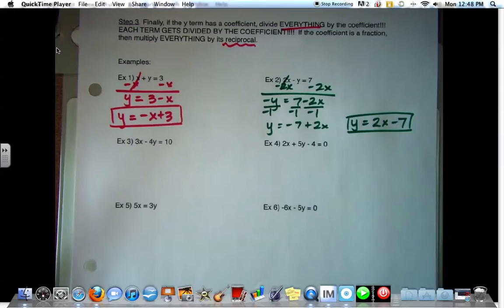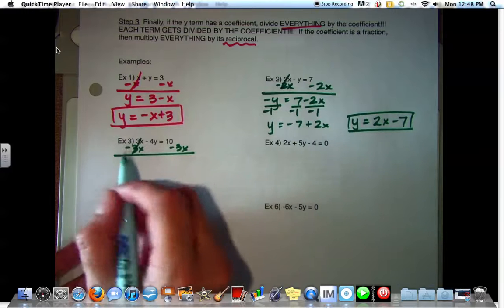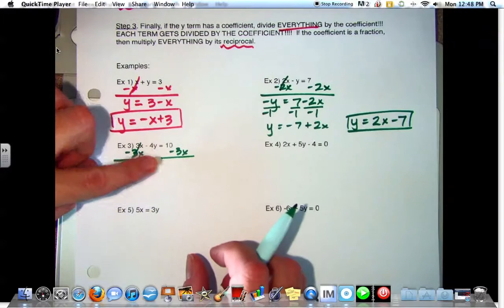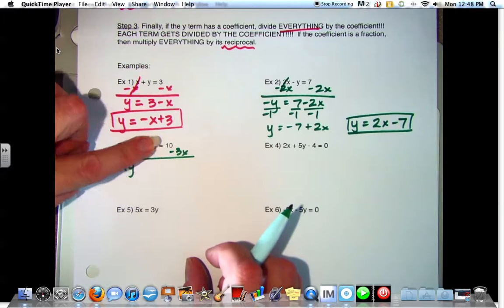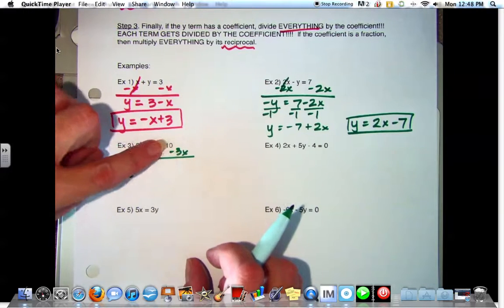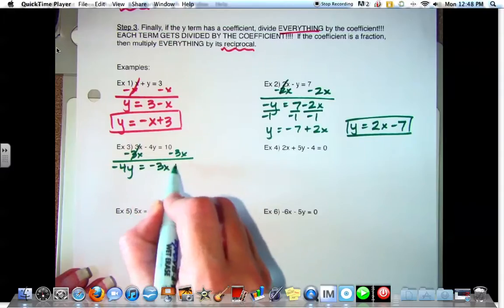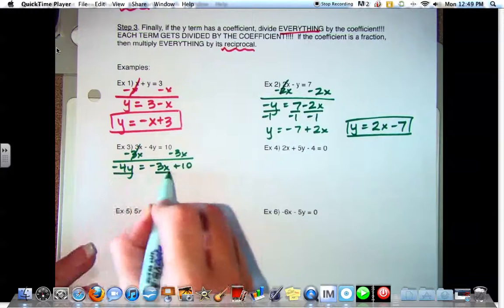Three X minus four Y equals ten. What do we need to move? Three X. Okay, subtract the three X. Negative four Y. Now, it's okay to write ten minus three X. It's also okay to write negative three X plus ten. Whatever you want. Negative three X plus ten. Then I'm not switching them around later. Either way is fine. Is the Y all by itself? No. So what do we need to do? Divide everything by negative four.